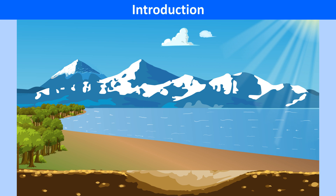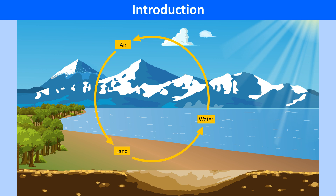The earth is made up of three components: land, air and water. These components are interdependent and sustain life on the earth. Together these three merge to make the biosphere or the zone of life.